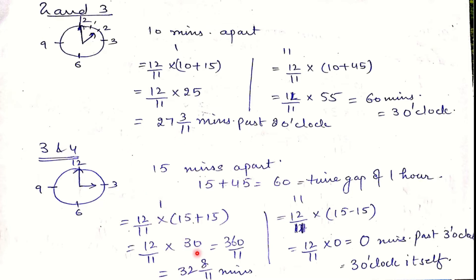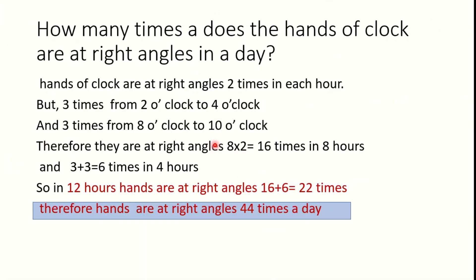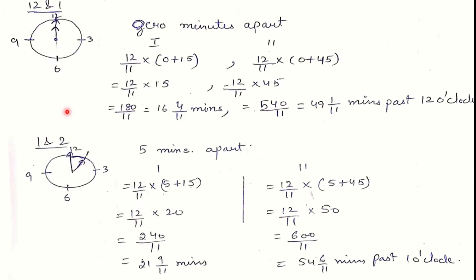Applying the rule for 3 to 4 o'clock — adding 15 to 15 — gives 32 and 8/11 minutes past 3 o'clock. So between 2 and 4 o'clock the hands are at right angles only three times: at 27 and 3/11 minutes past 2, at 3 o'clock exactly, and at 32 and 8/11 minutes past 3 o'clock. This explains why from 2 o'clock to 4 o'clock they meet at right angles three times instead of four.